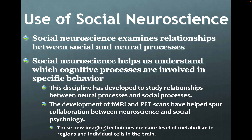Social neuroscience examines relationships between social and neural processes. This discipline helps us understand which cognitive processes are involved in specific behavior. The development of functional MRIs and PET scans has helped spur collaboration between neuroscience and social psychology. These new imaging techniques measure the level of metabolism in regions and individual cells in the brain, so we can see which specific areas of your brain are being activated.